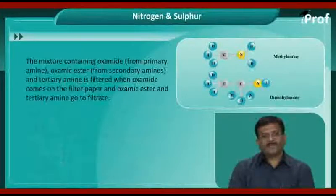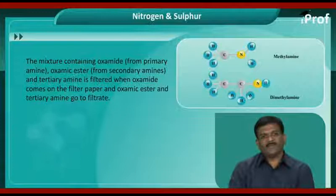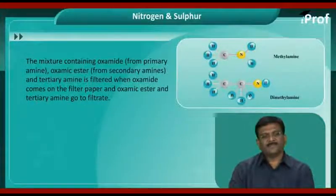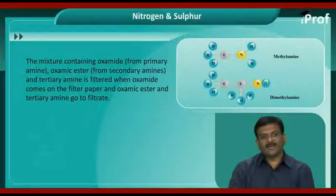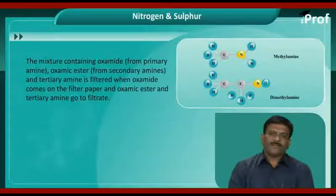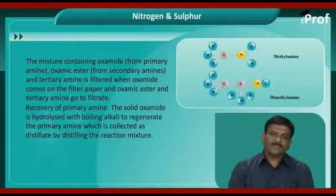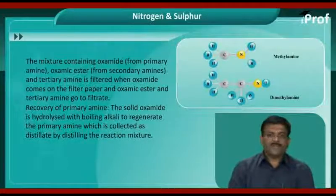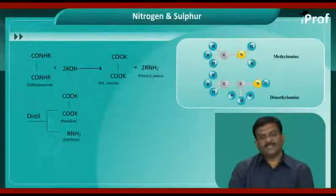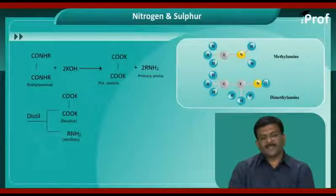The mixture containing oxamide from primary amines is filtered; oxamide remains on the filter paper, while oxamic ester and the tertiary amines pass into the filtrate. Recovery of primary amines: the solid oxamide is hydrolyzed with boiling alkali to regenerate the primary amines, which are collected as distillate by distilling the reaction mixture.